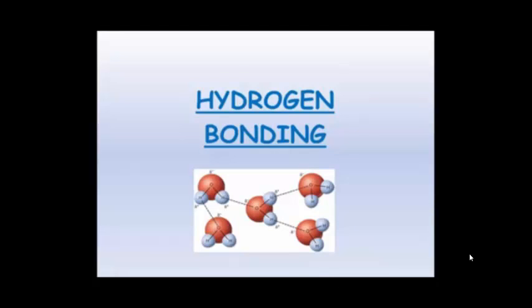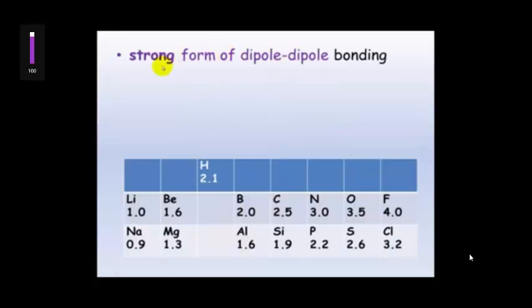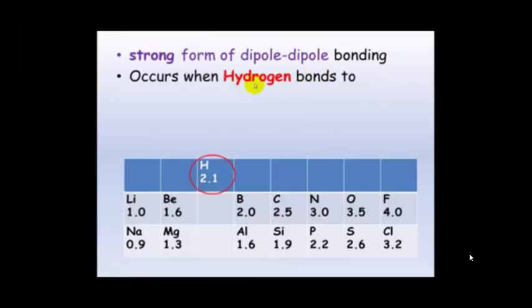Hydrogen Bonding simply is just a strong form of a dipole-dipole bond. And it occurs when Hydrogen bonds to either Nitrogen, Oxygen or Fluorine.